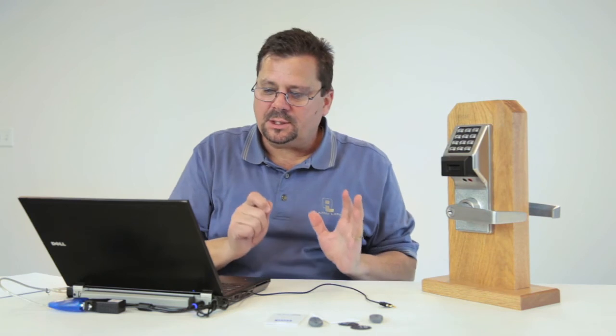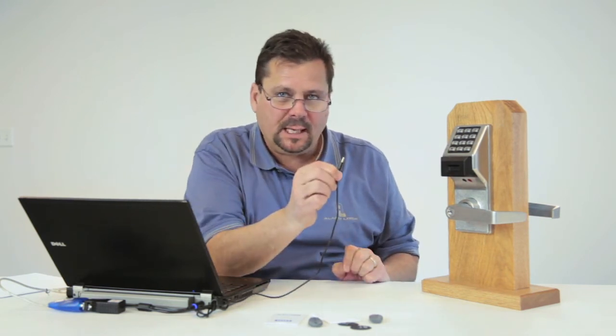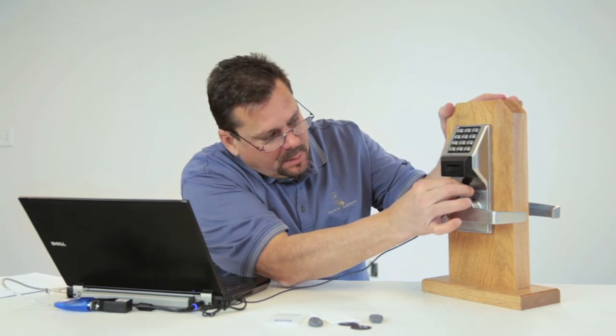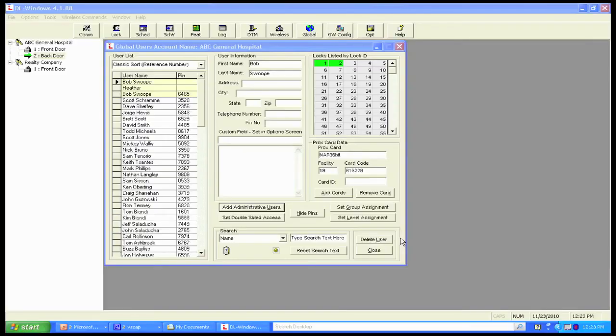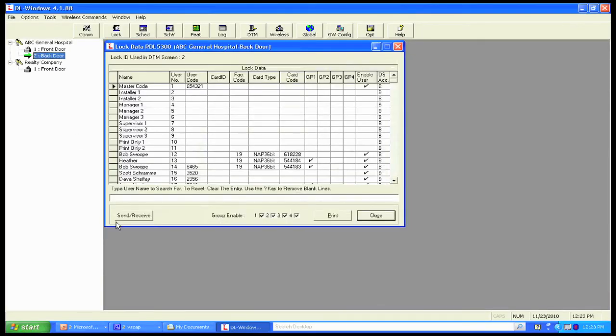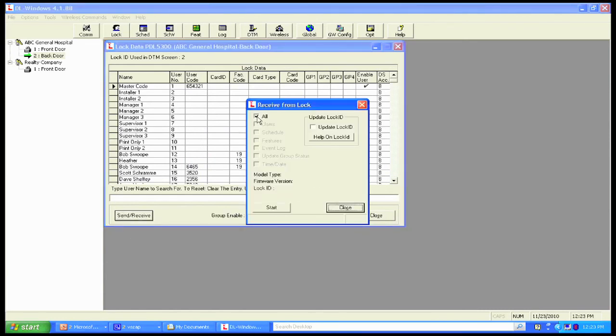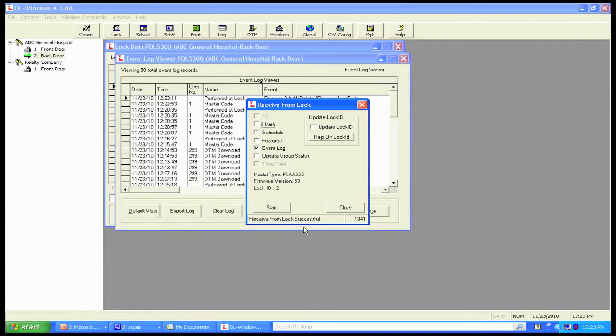Now what this allows us to do is it allows us to plug the PCI cable directly into the lock, just like we did previously, but instead of having to put the lock into programming mode using my master code, we simply can come up here to the back door, hit send and receive. And this time let's receive from the lock. And what we want to get is we want to get an event lock, the audit trail. We're going to hit start, and our code is 888. We hit start, 888. Get a green light. And what you'll notice on the screen is, and you see how quick that was, is we now have an audit trail.